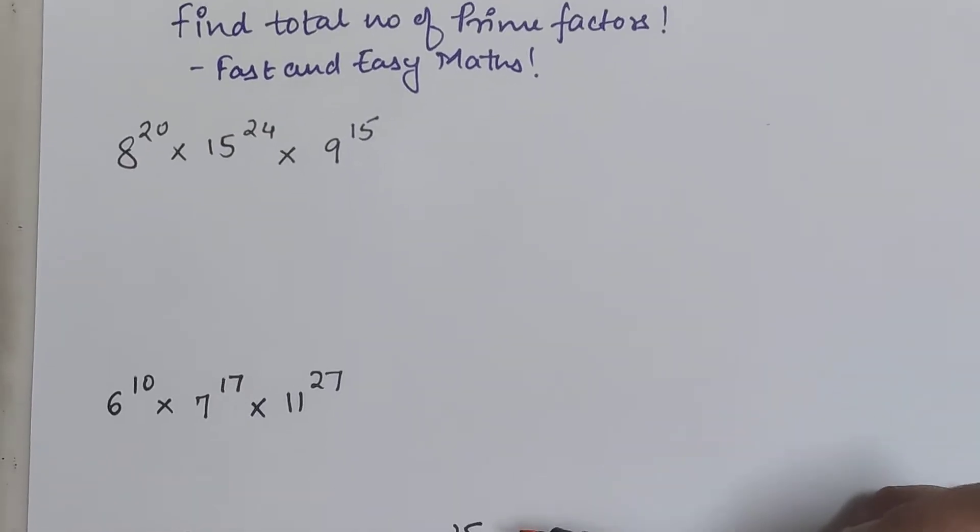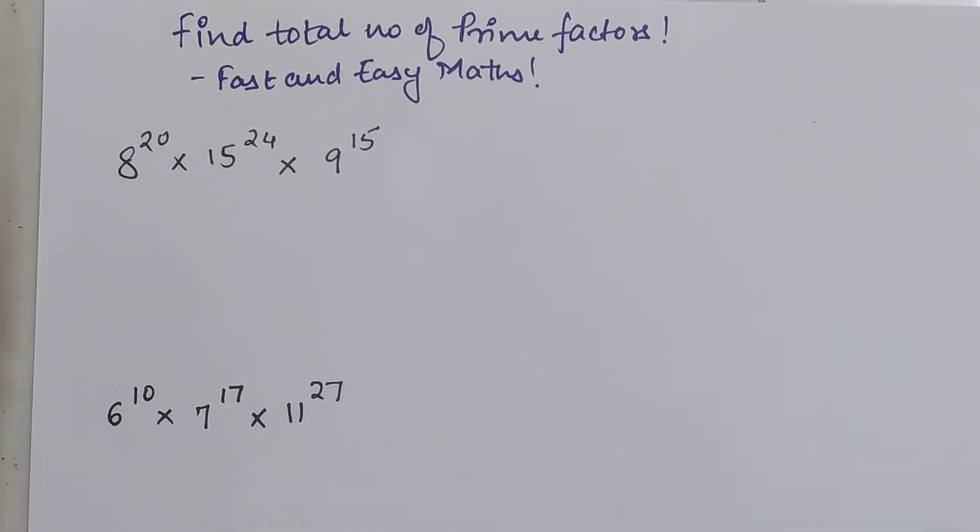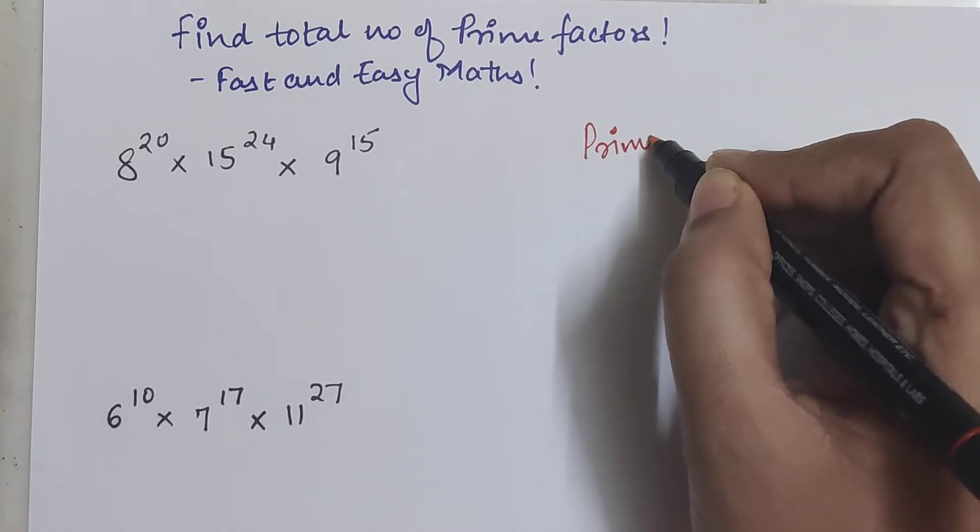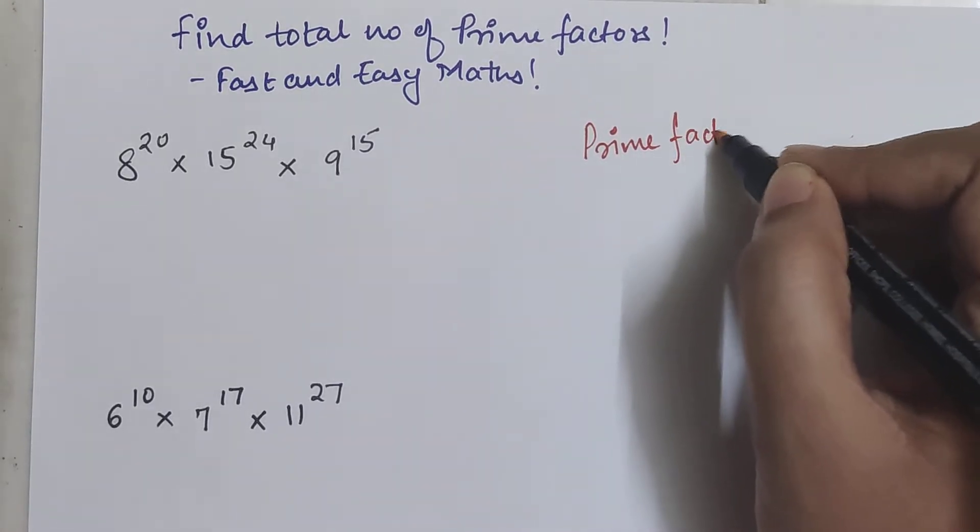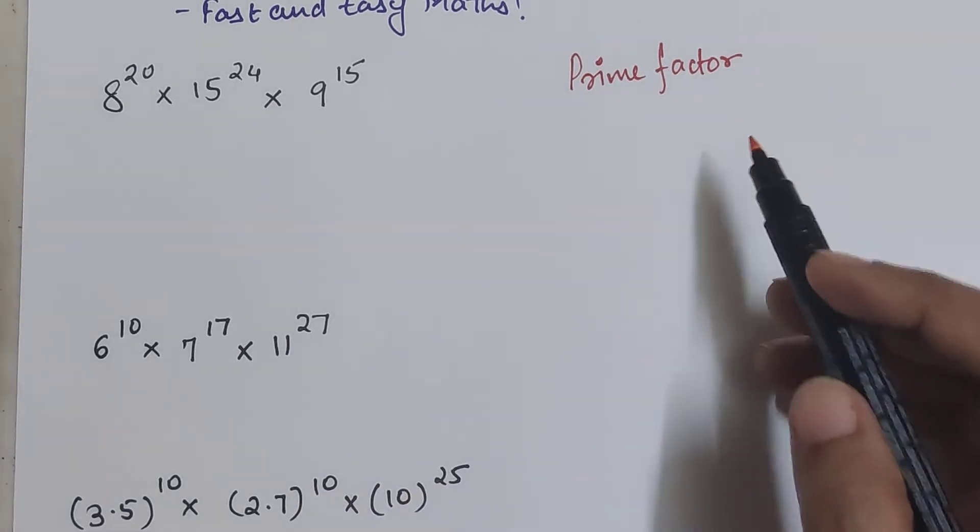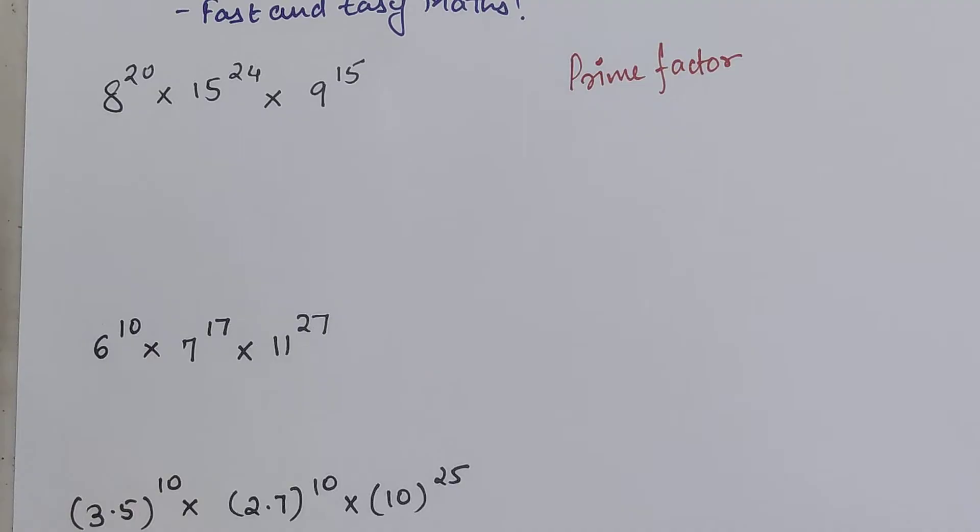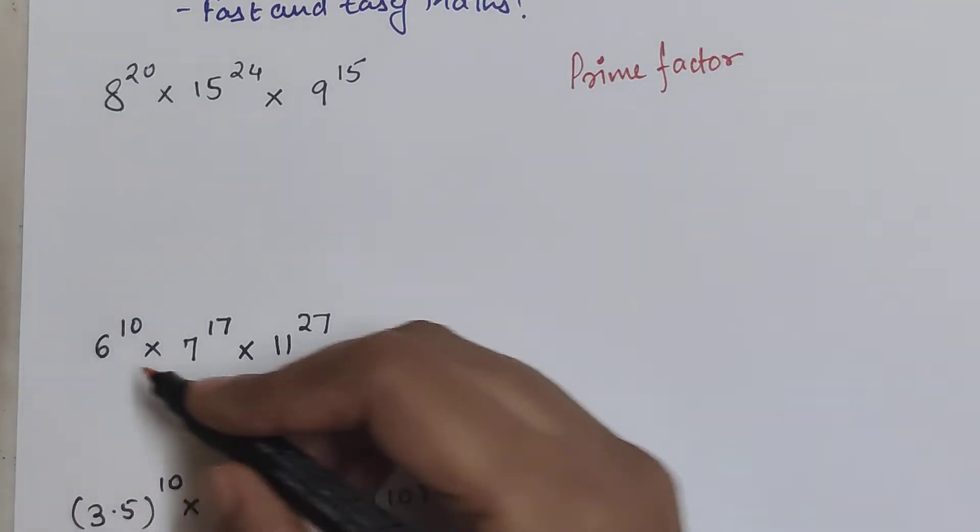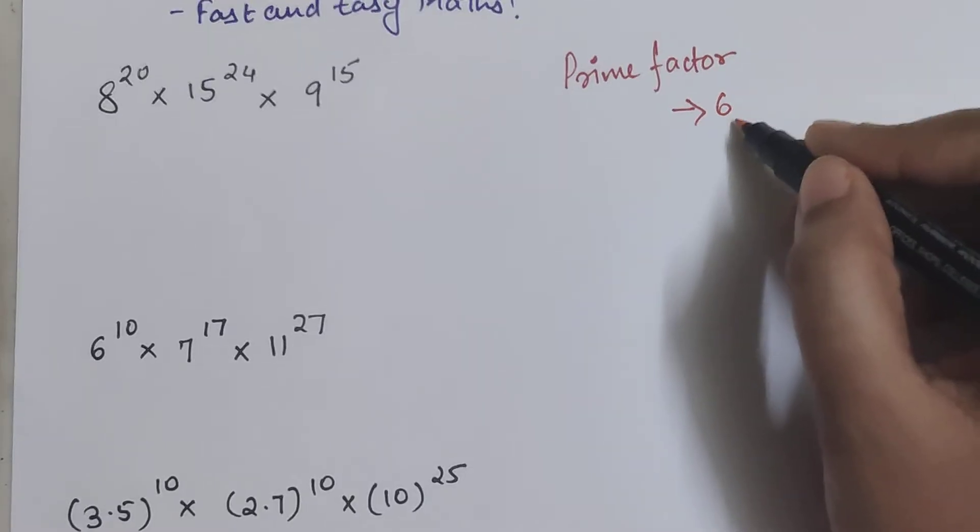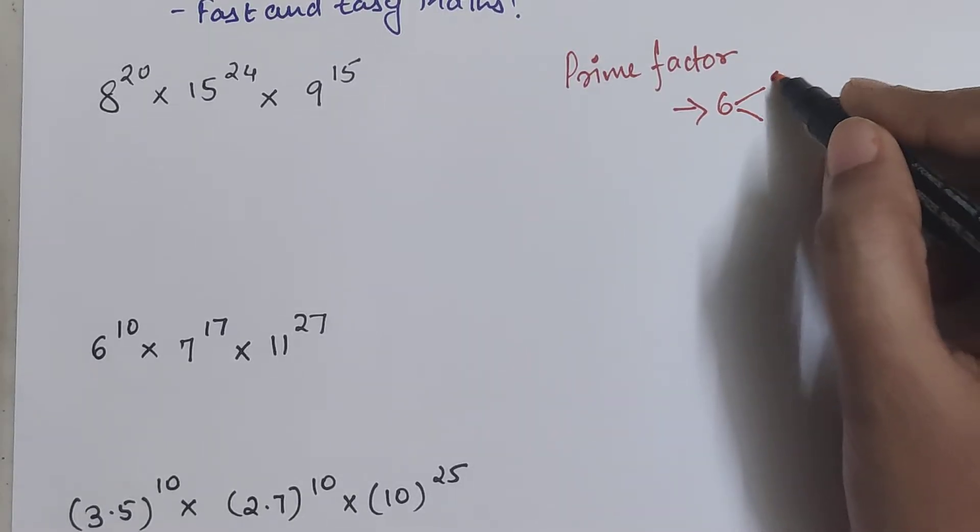Now before beginning with this, you need to clearly understand what is a prime factor. For example, let me say for 6. 6 can be written as 2 into 3. Both of them are prime numbers.